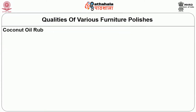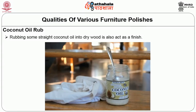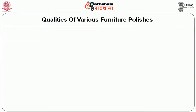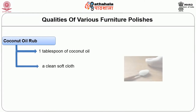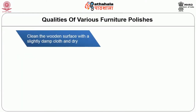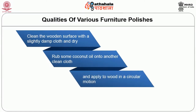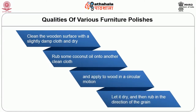The second homemade polish is coconut oil rub. Rubbing straight coconut oil into dry wood also acts as a finish. You will need about 1 tablespoon of coconut oil and a clean soft cloth. Clean the wooden surfaces with a slightly damp cloth and dry. Rub coconut oil onto another clean cloth and apply to the wood in a circular motion. Let it dry and then rub in the direction of the grain.